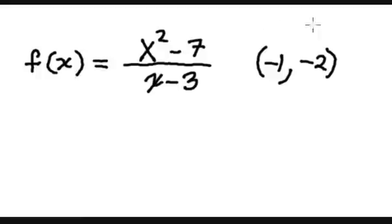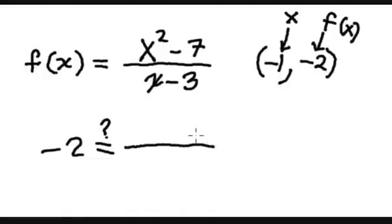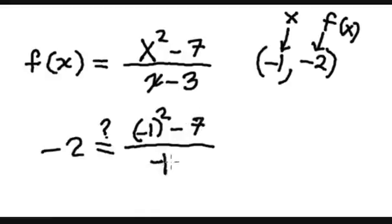The problem is f of x is y. To check, I have to prove negative 2 is equal — I don't know if it's true or false — the division between negative 1 squared minus 7, over negative 1 minus 3.